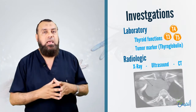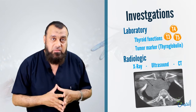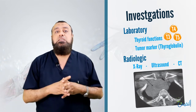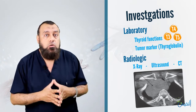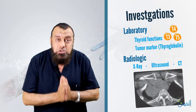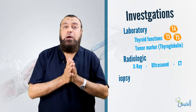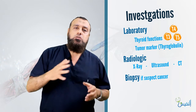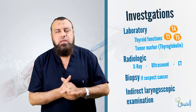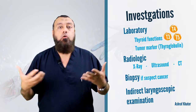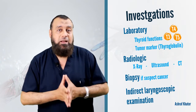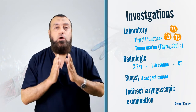CT scan can show airway compression, confirm ultrasound findings, and allow metastatic workup in cases of malignant suspicion. In cases of suspicion, a biopsy must be taken. Endoscopic examination by indirect laryngoscopy must also be done to assess the airway and vocal cords, to exclude vocal cord paralysis or airway compression before any operation.